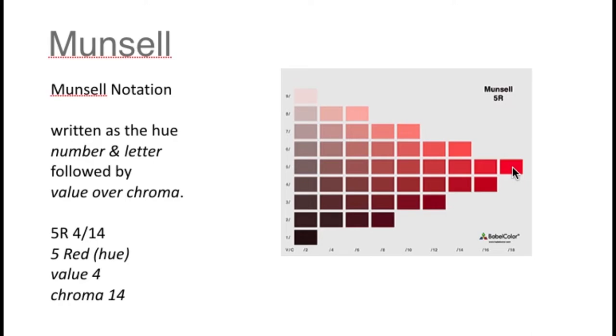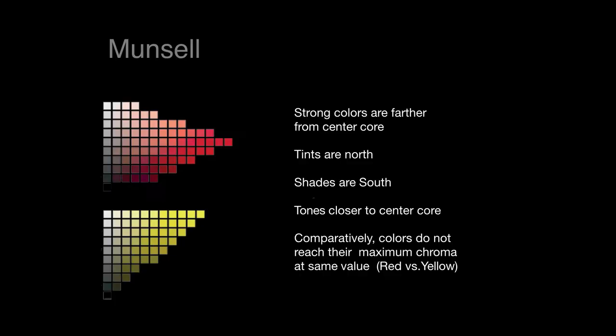So each one of these branches off the center trunk can be modulated out like this. Here is the fully chromatic color. And then it moves in toward tonality, toward the center core. The idea with Munsell is that the more saturated colors or the stronger colors, those that Itten would call more forceful,